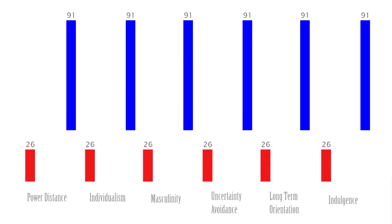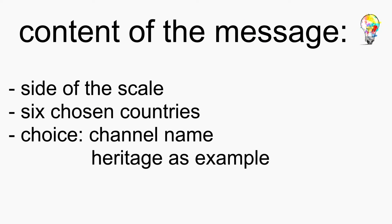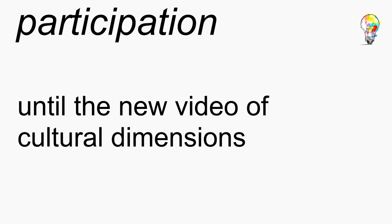Guess the top 6 examples for each cultural dimension. Choose wisely for which end of the scale you are participating, because you can only guess one side. Please state in the comments or via a channel message which end of the scale you have chosen, your 6 countries, and if you want your name or country to be shown. You can participate until the new video is produced, which usually takes 4 weeks. The first 5 participants for each language who got it all right will be picked.